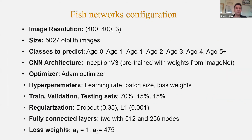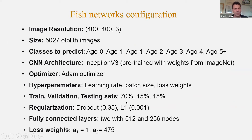An overview of the configuration: we have six age classes, with key hyperparameters being learning rate, batch size, and loss weights. We used 70/15/15% splits for training, validation, and testing sets. We applied regularization techniques — dropout and L1 — to reduce overfitting. The loss weights were set at 1 versus 475 to balance the multi-task learning between age and length prediction.